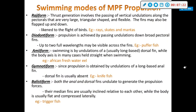Rajiform swimmers — your skates, rays, and manta rays — generate thrust by passing vertical undulations along their pectoral fins, which are very large, triangular-shaped, and flexible. These fins may also be flapped up and down like a bird.